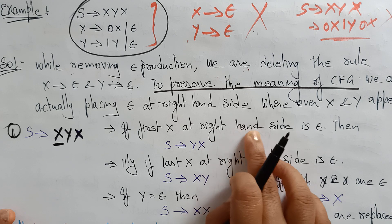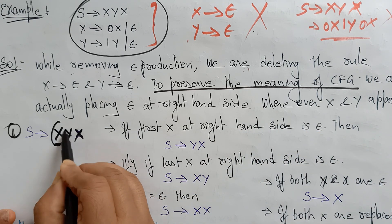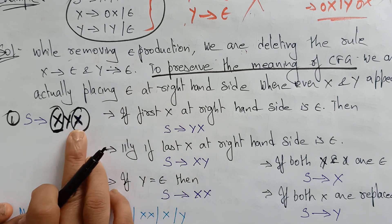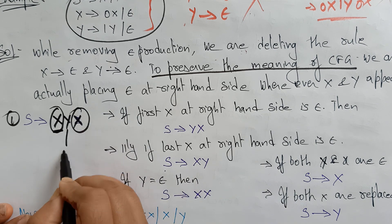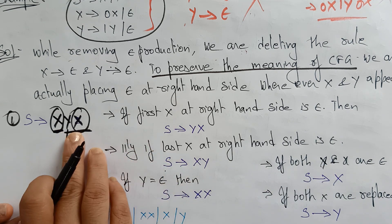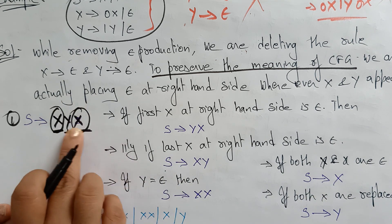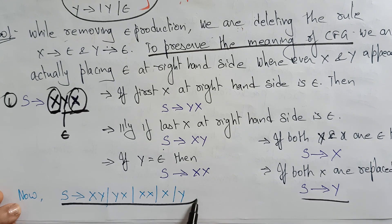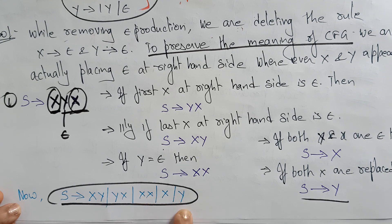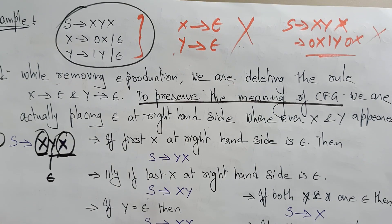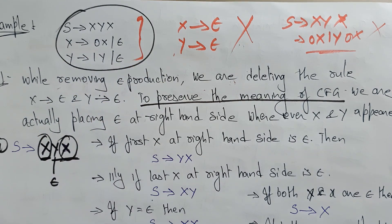If the first X on the right-hand side is Epsilon, you get S determines YX. If the last X is Epsilon, you get S determines XY. If Y is Epsilon, you get S determines XX. If both Y and X are Epsilon, you get S determines X. If both X's are Epsilon, you get simply S determines Y. So finally, S can be replaced with XY, YX, XX, or Y — combining all these new productions.